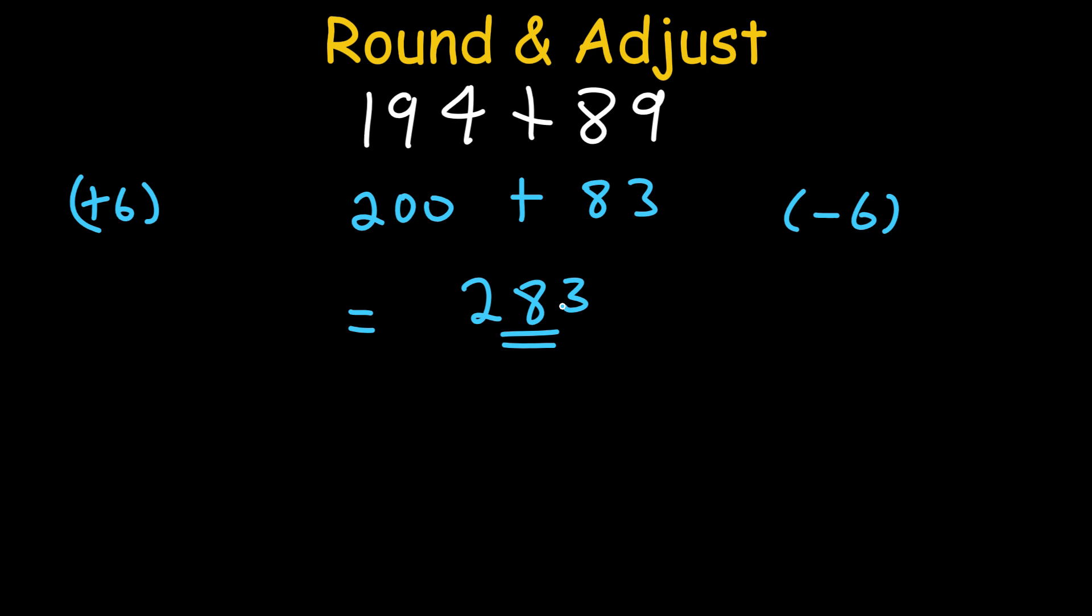Now test your brain, try it yourself. What's 96 plus 47 in 5 seconds? 5, 4, 3, 2, 1, 0. Did you get 143? If you solved it in less than 5 seconds, let me know down in the comments.